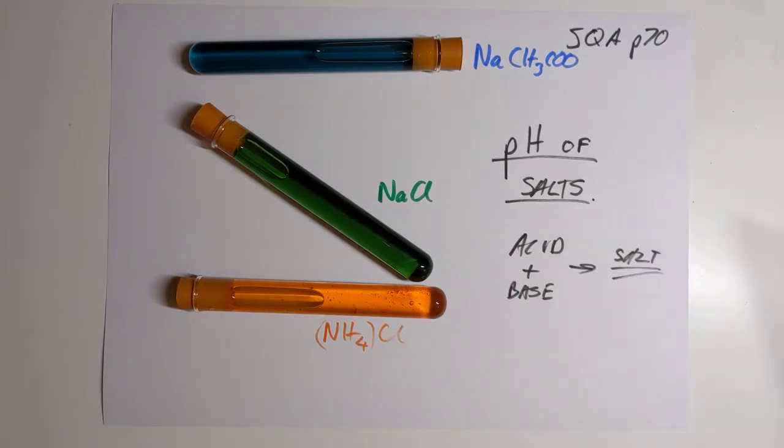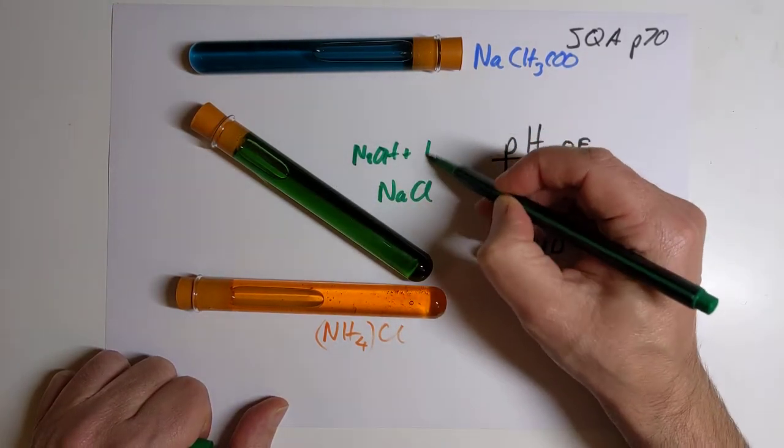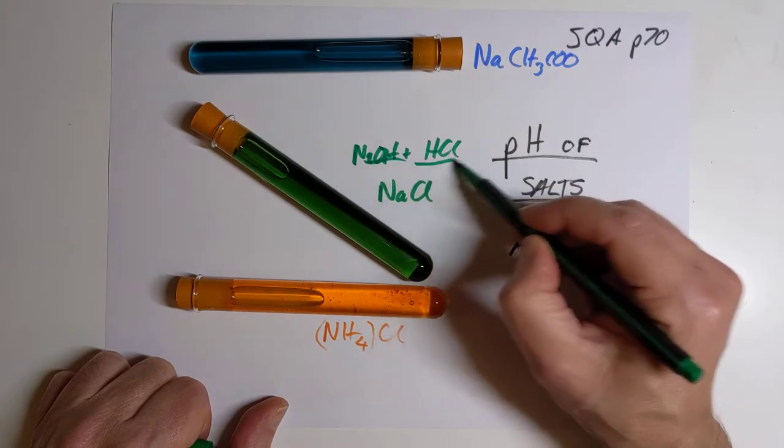Let's have a look at why these salts, obviously made from an acid and a base. I'm hoping that you can work out that the sodium chloride is made from sodium hydroxide and hydrochloric acid. Both of which are strong.